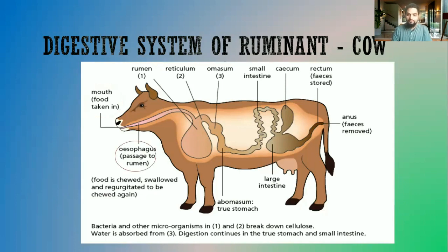The food is ingested from the mouth, and the first structure it passes through after the mouth is the oesophagus. There is some amount of chewing that occurs in the mouth, which helps to break the food down into smaller pieces, but it takes a long time for the animal to break down the grass it will consume.